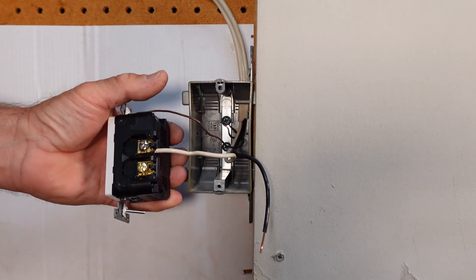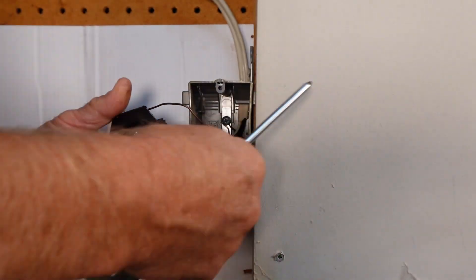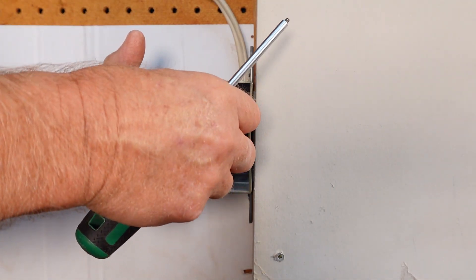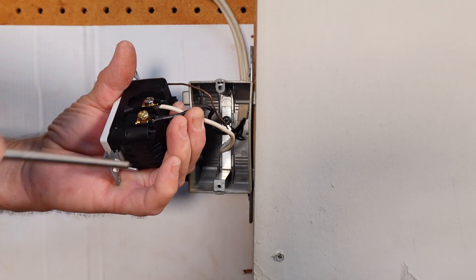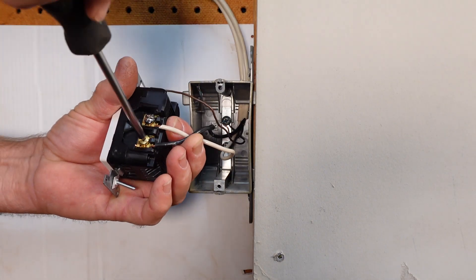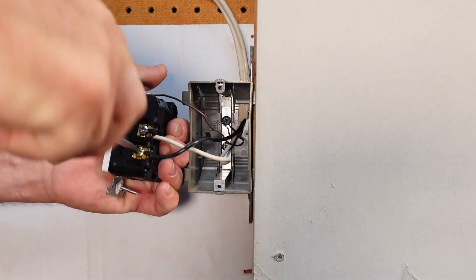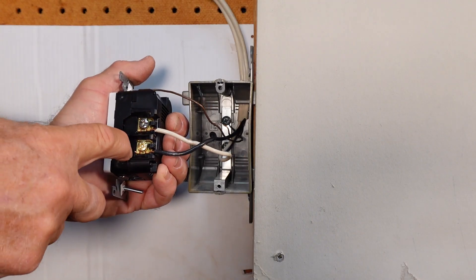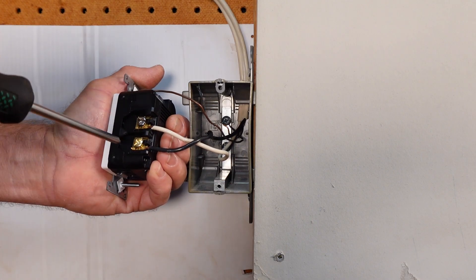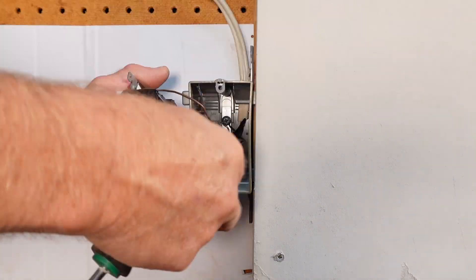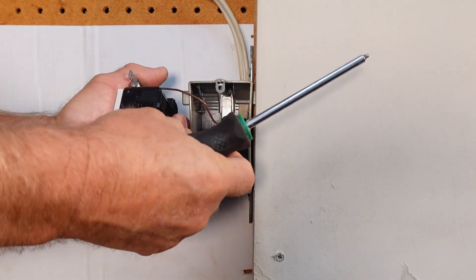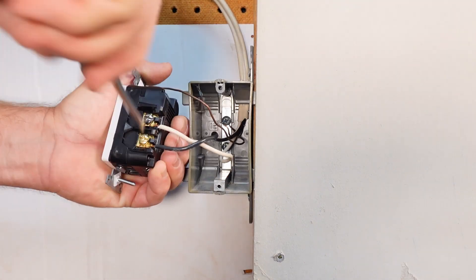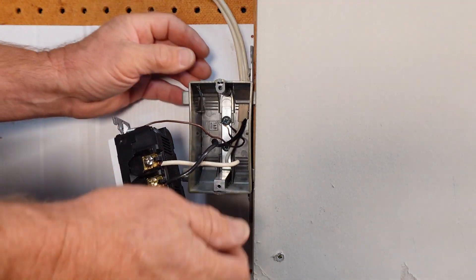Pull on it not going anywhere it's in there tight. Now the hot so working again on a new device ground first, neutral second and your hot wire last. Tug test. Now see you got a little bit of the black wire a little too far out from under the pressure plate so I'm going to back that off a little bit. That just ensures that you're getting a nice flat connection behind the pressure plate and against the contact point. So there you go.